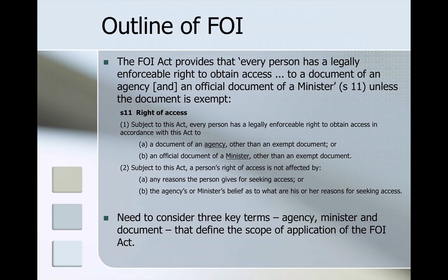The Act provides that every person has a legally enforceable right to obtain access to a document of an agency and an official document of a minister, unless the document is exempt. This is provided for in Section 11 of the Act. To understand the scope of the FOI regime, we need to consider three key terms contained in Section 11: what is meant by an agency, what is meant by a minister, and what is meant by a document.